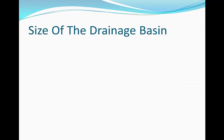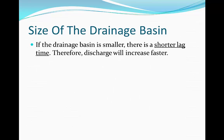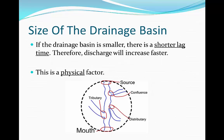The size of the drainage basin is another factor. If the drainage basin is much smaller, there's going to be a shorter lag time, so the discharge will increase faster. If there's a small surface area of the drainage basin when it rains, it's going to be a lot easier for all of it to land into the river. As a result, the amount of water falling into the river will exceed the infiltration capacity, and the size and amount of discharge will increase over time.